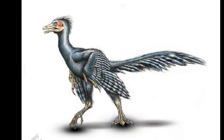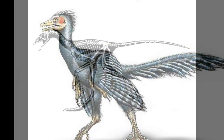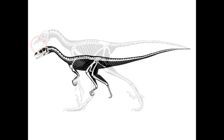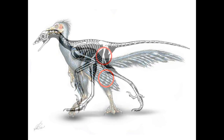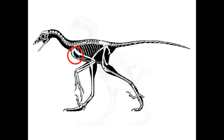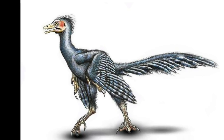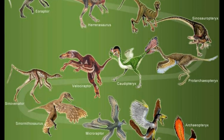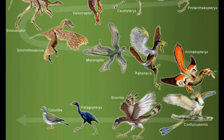Named Archaeopteryx, it was a transitional form between dinosaurs and birds. It possessed the bony tail, clawed fingers, tooth jaws, and snout characteristic of theropod dinosaurs, as well as the wings, flight feathers, hollow bones, and wishbone characteristic of birds. While likely not the direct ancestor of modern birds, Archaeopteryx is nevertheless a perfect example of a form transitioning from one type of species into another.